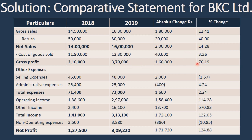Similarly, gross profit has changed by 76.19%, which is really great. Total income has gone up by 122% — 1 lakh 72,000 is the increase from 1 lakh 41,000, so that is more than 100%, at 122.05%. And net profit has gone from 1 lakh 32,500 to 3 lakhs 9,220 — a net change of 1 lakh 76,720 — that is a 124% increase.